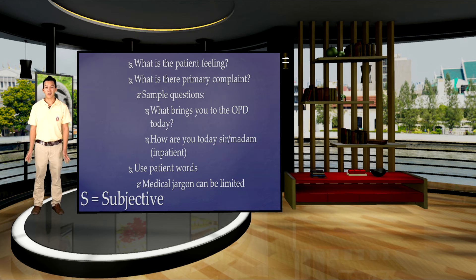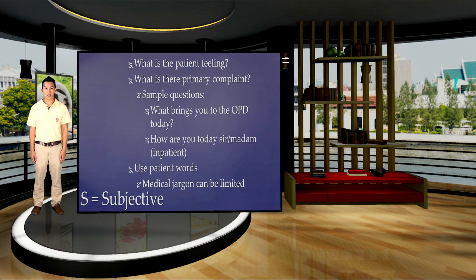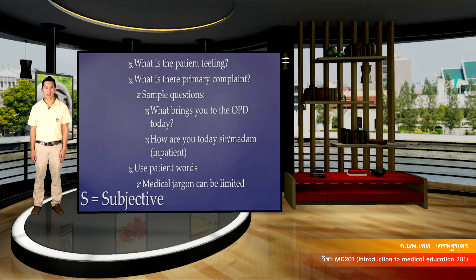The S is the subjective aspect of the SOAP note — this is what the patient is feeling. They describe their primary ailment for coming to seek the physician. Sample questions include what brings you to the outpatient clinic today and how the person is feeling. Additionally, you want to use words patients can understand, as medical jargon can sometimes confuse patients and make the encounter more difficult.